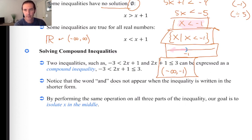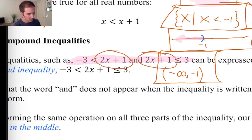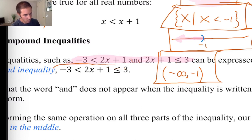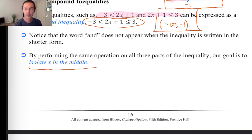We also have compound inequalities. A compound inequality is a pair of inequalities with the word AND between them. When both inequalities contain the same expression — like both containing 2x plus one — a compound inequality can be rewritten as one three-part inequality. When you work on them, you perform the same operation to all three regions: the left, middle, and right. The goal is typically to isolate your variable in the middle region.